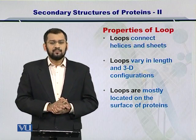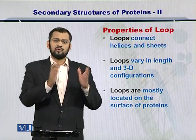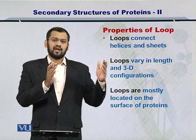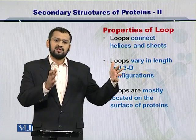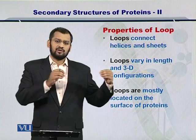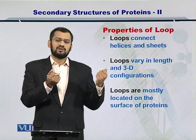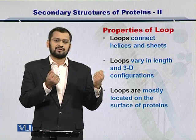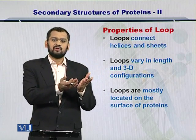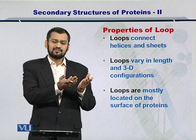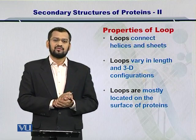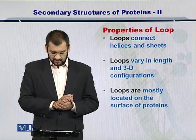The loops may vary in length — some loops may be short, some loops may be long. For instance, if two alpha helices are located at a large distance, then you will need a longer loop to hold the two ends of the alpha helices together. Or if a beta sheet is located very close to some other alpha helix, then a very small loop can connect the alpha helix and the beta sheet together as well.